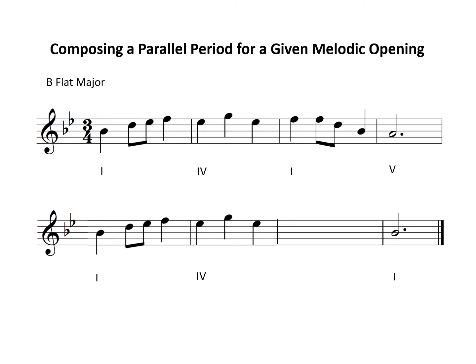A good chord for bar 7 would be the dominant, as it implies an authentic cadence and a strong ending. Now, just as we did in phrase 1, write the second-to-last note of bar 7 as a note of the dominant triad that steps to it. The dominant chord is F-A-C, and so I could use A or C, but I'll step up this time and choose A. Then fill in the remaining beats of bar 7 with notes that work with the dominant chord.